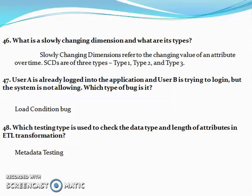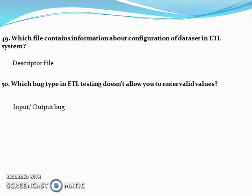User A is already logged in to the application and user B is trying to login but the system does not allow it — which type of bug is it? Which testing type is used to check the data type and length attributes in ETL transformation? Which file contains information about the configuration of a dataset in an ETL system? Which bug type in ETL testing does not allow you to enter valid values?